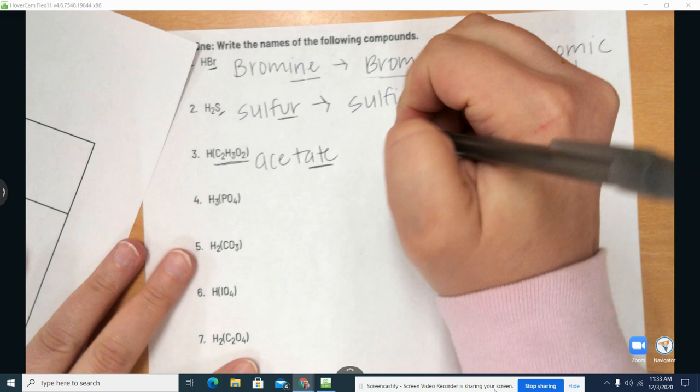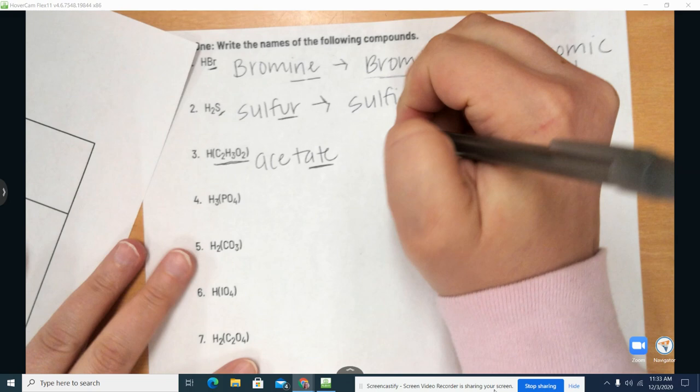So the base of the word stays, but then we just change the ending with I-C. So we'd have, so again, this is the part we're removing. So then we have acetic acid.